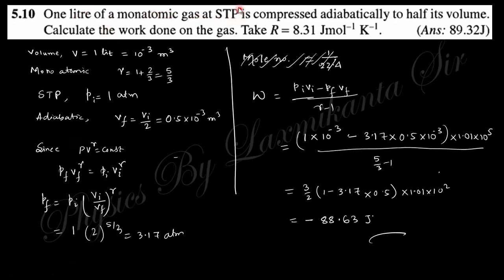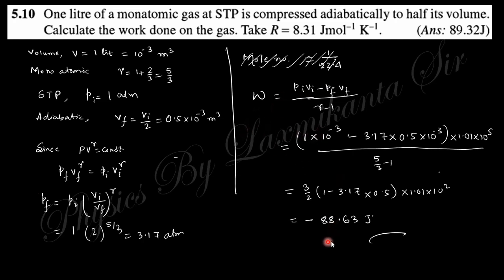Question 11: One liter of monoatomic gas at STP is compressed adiabatically to half its volume. The initial volume is 1 liter (10⁻³ m³) and final volume is 0.5 × 10⁻³ m³. Initial pressure is 1 atmosphere. Using the relation PV^γ = constant, the final pressure is found to be 3.17 atmospheres. The work done in the adiabatic process is W = (P₁V₁ − P₂V₂) / (γ − 1). Substituting the values of P₁V₁, P₂V₂, and γ gives the work done.